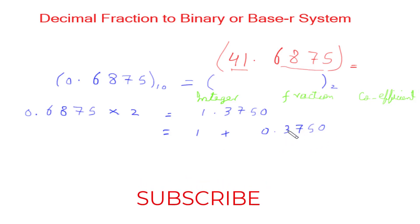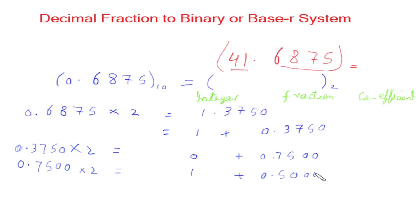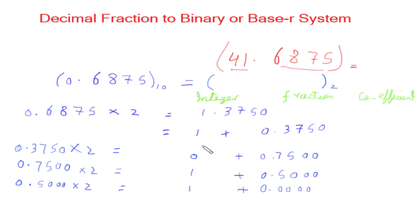Now we multiply the new fraction 0.3750 by 2 and get 0.7500, so integer = 0, fraction = 0.7500. Multiply 0.7500 by 2 to get 1.5000, so integer = 1, fraction = 0.5000. Multiply 0.5000 by 2 to get 1.0000, so integer = 1, fraction = 0.0000. We multiply the fraction by 2 each time to get a new integer and fraction; this process continues until the fraction becomes zero or we have sufficient accuracy.